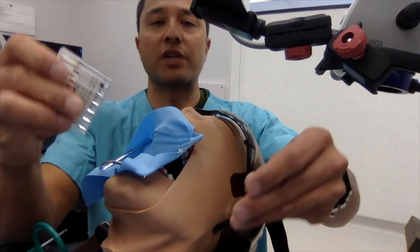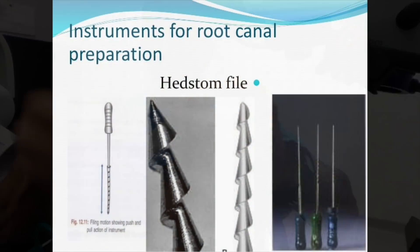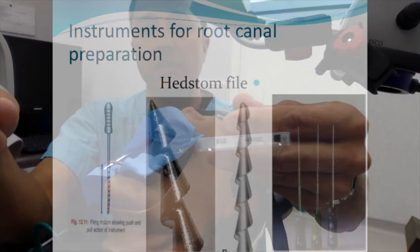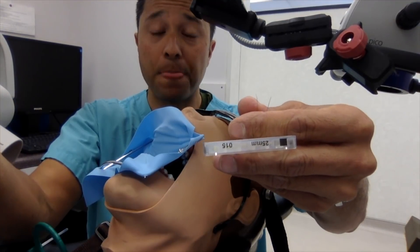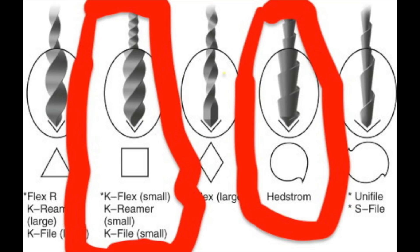What we're going to do is place a Hedstrom file. A Hedstrom file has a different cross-sectional diameter — so that's our regular K-file, most of them. And then there's our Hedstrom file, which is essentially a circle. It's used for much more aggressive filing.